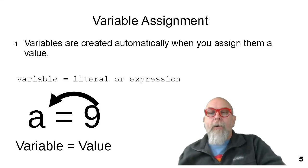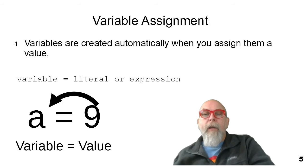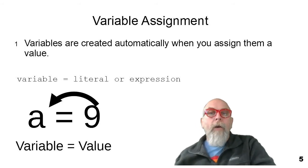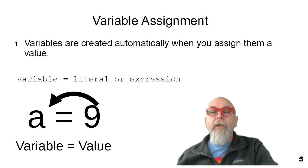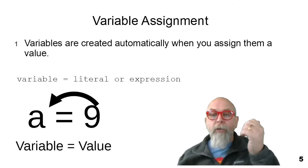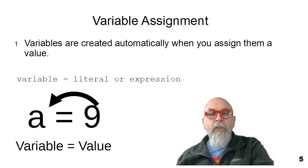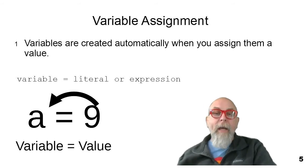You remember a couple of slides ago, I said that we must assign a variable a value before we can use it. We use the equal sign to assign a variable a value. We say variable name equals something. Now, the something can be a literal, an expression, the result of a calculation, a function, all kinds of different things. But let's just keep it simple and say variable equals something. And you can see the little picture here off to the side that it shows that a 9 is being assigned to the variable when you say a equals 9.